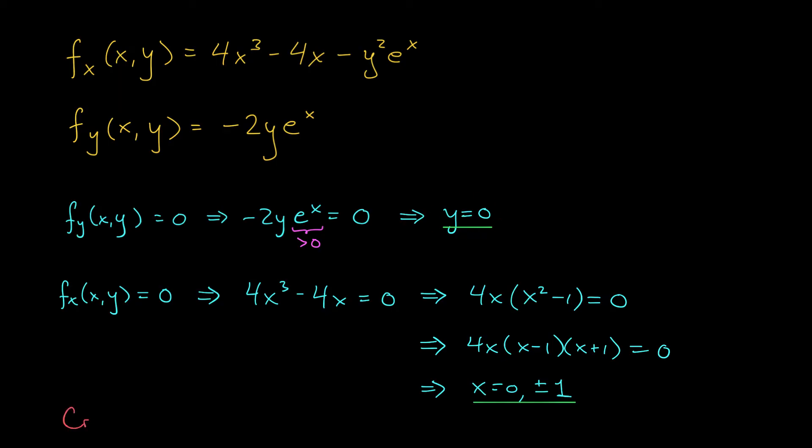So we have three critical points here. Three critical points. The point minus 1, 0, the point 0, 0, and the point 1, 0. Okay, great. We found our critical points. Now we have to classify them.